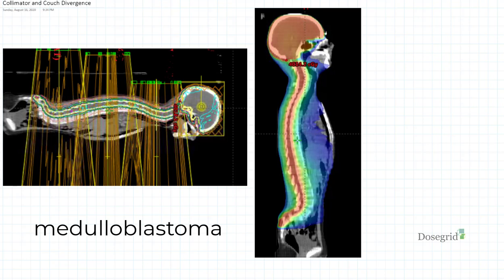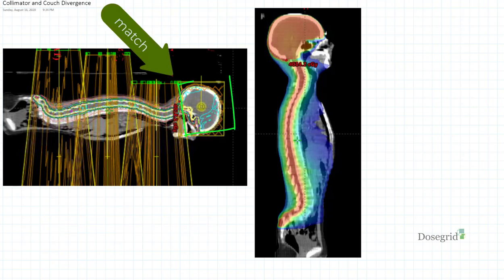In 3D planning, the collimator angle of the brain fields must match the divergence of the superior spine field. This is to prevent overdose and underdose at the junction.